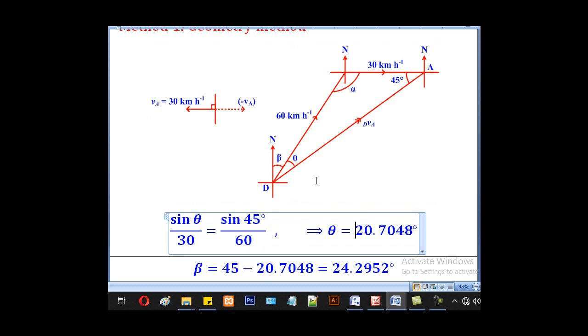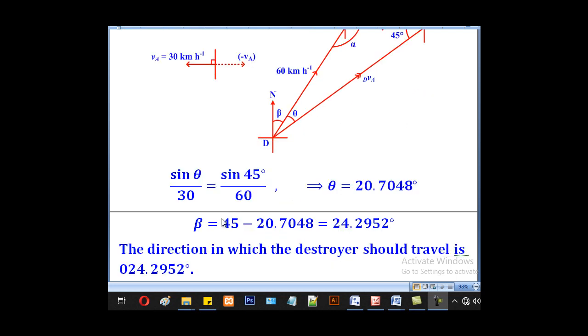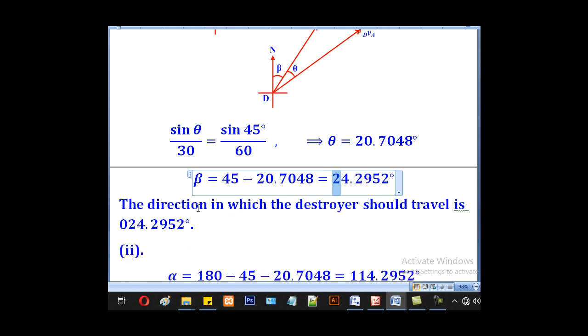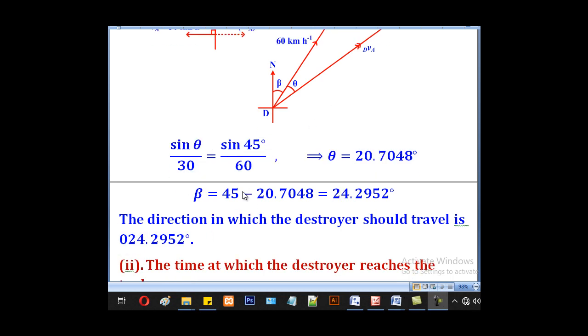After getting this theta, we can now get beta by adding and equating to 45. So this plus this is the same as 45, which is here, alternating angles. Therefore, beta will equal 45 minus theta which is 20.7048. Therefore, we will get 24.2952 degrees. That will be the direction. Therefore, the direction in which the destroyer should travel is 024.2952.